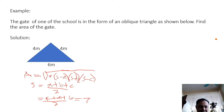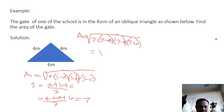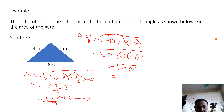Substituting into the formula, the area equals the square root of 7 times 7 minus 4, times 7 minus 4, times 7 minus 6. Simplifying, that is 7 times 3 times 3 times 1, which gives the square root of 63 meters squared. That is the final answer.